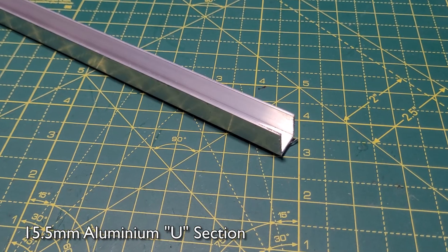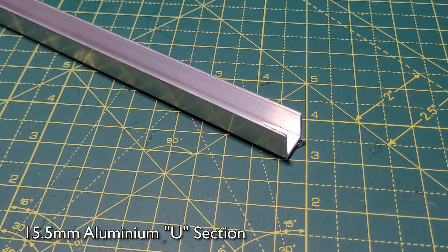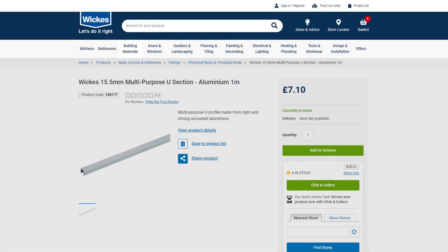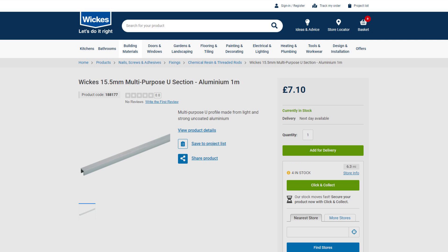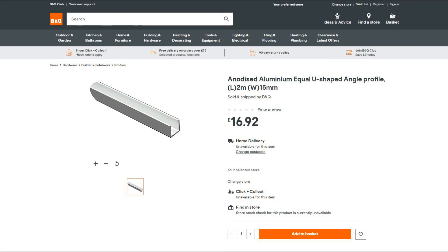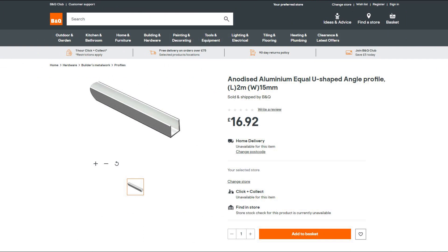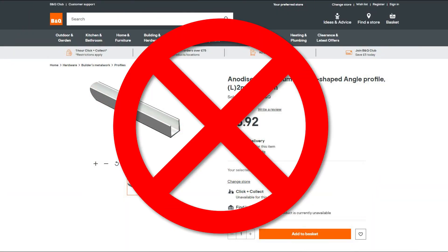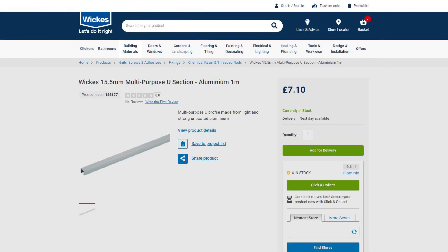The mount itself is going to be made from 15.5 millimeter wide aluminium U-channel. John told me to purchase this from Wickes, which is a DIY store here in the UK. I bought some from B&Q which was a mistake. This was only 15 millimeters wide and it turns out that extra 0.5 millimeters makes a huge difference. So I can confirm that it does need to be the 15.5 millimeter U-channel and Wickes is the place to go.